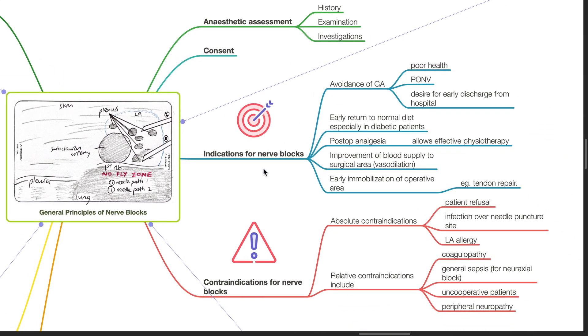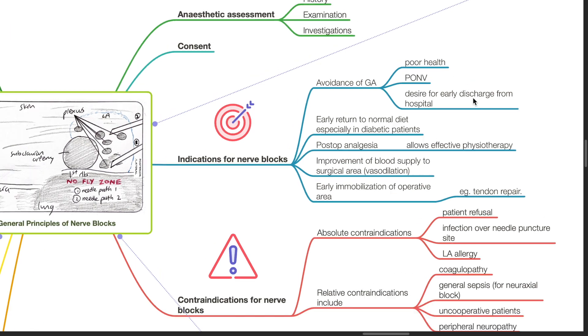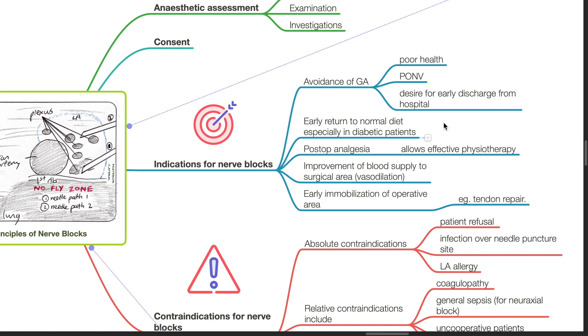Indications for nerve blocks include avoiding general anesthesia due to poor health, post-operative nausea, vomiting, or desire for early discharge from hospital, early return to normal diet especially in diabetic patients, post-operative analgesia which allows effective physiotherapy, improvement of blood supply to the surgical area, and early immobilization of operative area such as tendon repair.